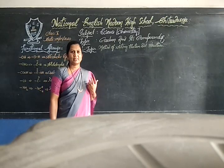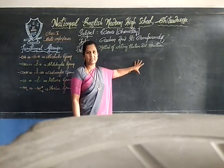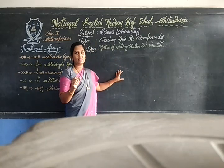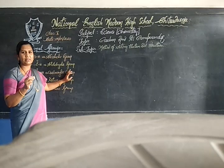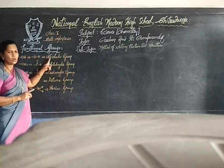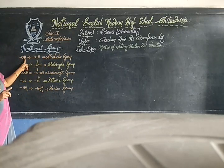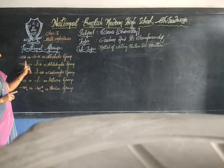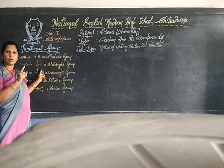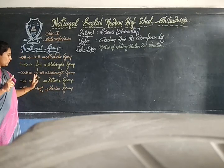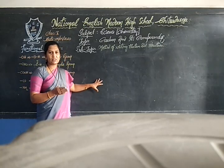Good morning everyone. In the previous class we studied about harmonic compounds and how to write the structure. Today we shall study how to write the electron dot structure. Before going to that, let us see which are the functional groups. The main functional groups are: alcoholic group, aldehyde group, carboxylic group, ketone group, and amino group. The alcoholic group is designated by OH, aldehyde group as CHO (C double bond O H), carboxylic group as C double bond O, OH, ketone group as C double bond O, and amino group as NH2.